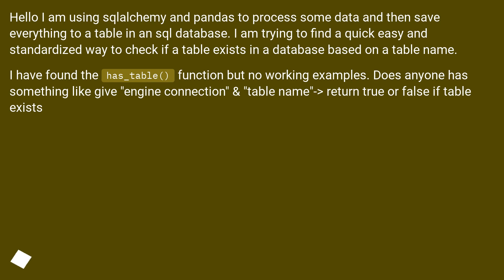I am trying to find a quick, easy and standardized way to check if a table exists in a database based on a table name. I have found the has_table function but no working examples. Does anyone have something like: give engine connection and table name, return true or false if table exists?